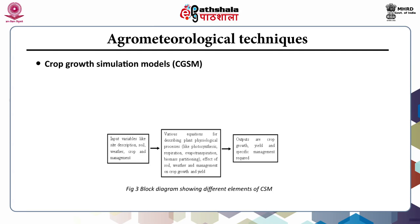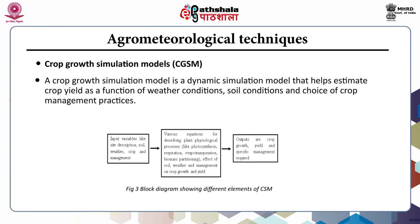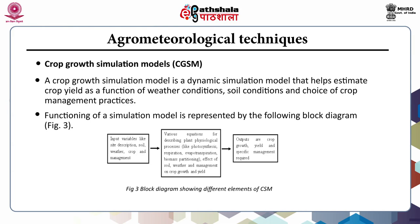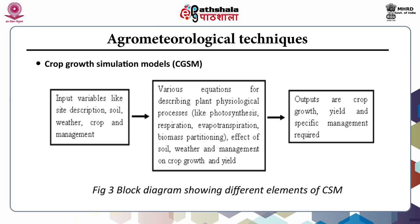Crop Growth Simulation Models (CGSMs) are dynamic simulation models that help estimate crop yield as a function of weather conditions, soil conditions, and crop management practices. A block diagram shows input variables — site description, soil, weather, crop, and management — feeding into equations that describe plant physiological processes such as photosynthesis, respiration, evapotranspiration, and biomass partitioning, as well as the effects of soil, weather, and management on crop growth and yield, producing outputs of crop growth, yield, and required management recommendations.